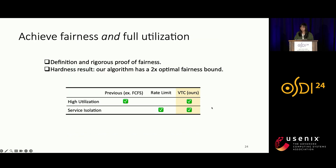In summary, we did a rigorous analysis and show that this simple algorithm provides a fairness guarantee while maintaining full utilization. We also have a hardness result showing our algorithm achieves a two-times optimal fairness bound. Previous methods deliver high utilization or service isolation but not both. With VTC, we have both. Thank you.